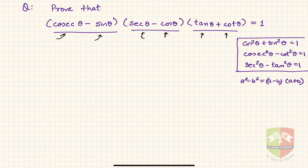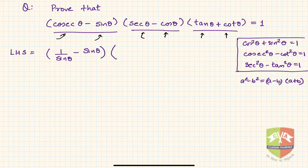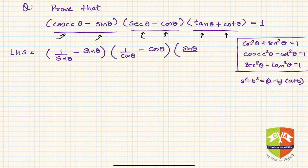So in the LHS, I write cosecant theta as 1 over sine theta, and sine theta is left as it is. Secant theta becomes 1 over cos theta, and cos theta remains. Tan can be written as sine over cos, and cot can be written as cos theta over sine theta.